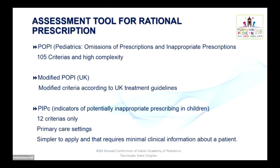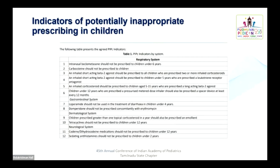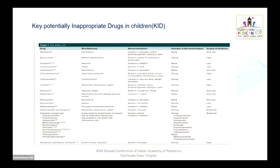PIP is an area of interest for research for postgraduate students and consists of 12 indicators. One indicator: intranasal beclomethasone should not be prescribed to children under six years. Like that, there are 12 indicators in the PIP tool. Using this PIP tool, many countries have come up with a concept called KID — Key potentially Inappropriate Drugs in children. This list consists of many drugs. The first entry on the list mentions codeine, which can cause respiratory depression and death in children.